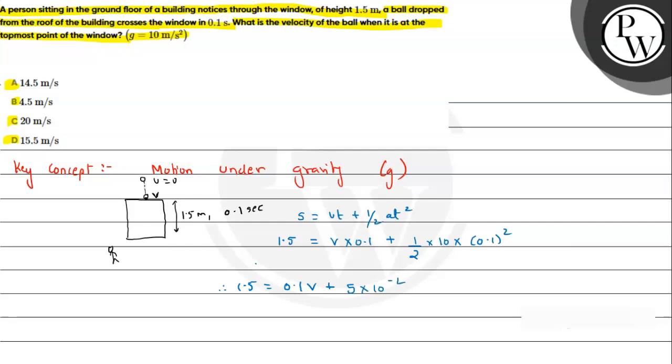Therefore, 1.5 minus 0.05 equals 0.1v. When we subtract, we get 1.45 equals 0.1v. If you multiply both sides by 10, we get v equals 14.5 meter per second.